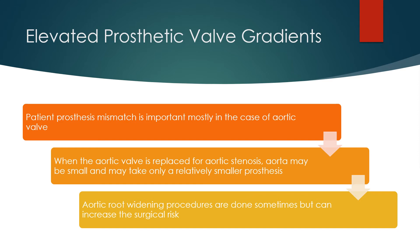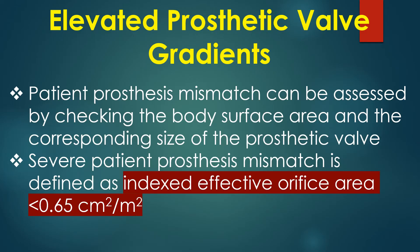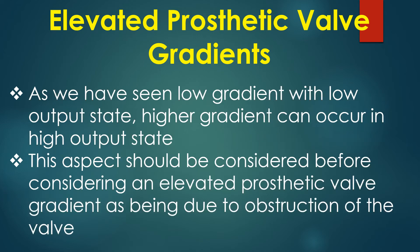Patient-prosthesis mismatch is important mostly in the case of aortic valve. When the aortic valve is replaced for aortic stenosis, the aorta may be small and may take only a relatively smaller prosthesis. Aortic root widening procedures are done sometimes but can increase surgical risk. Patient-prosthesis mismatch can be assessed by checking body surface area and the corresponding size of the prosthetic valve. Severe patient-prosthesis mismatch is defined as indexed effective orifice area less than 0.65 cm² per m² body surface area.